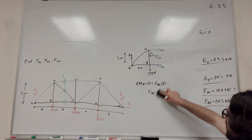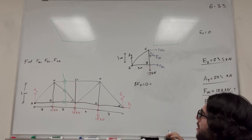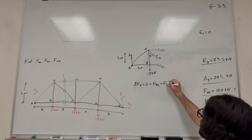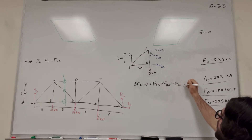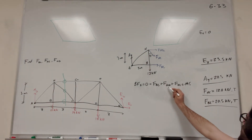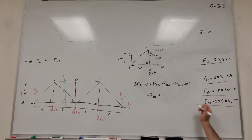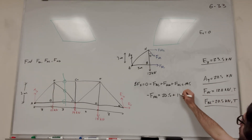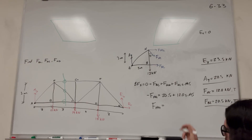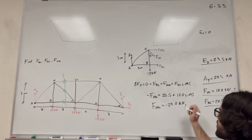For the last unknown, we sum forces in the X direction. We have force BC plus force HG plus force HC times sine 45 equals zero. Solving for force HG: negative force HG equals 20.5 plus 12 times cosine 45, giving force HG equal to negative 29 kilonewtons. The negative sign means the member is in compression.